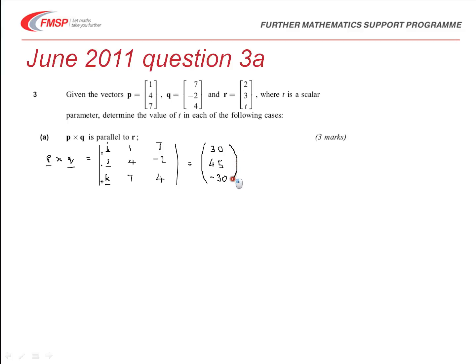So now we've got to realize, if this P cross Q is parallel to R, it must be a multiple of R. We can see that first entry is a 2, and we've got 30 in the answer for P cross Q, so this must be 15 lots of whatever R is. So this must be 15 times 2, 15 times 3 gives us 45, so what times 15 gives us negative 30? This would have to be negative 2, and so the value of T that we require here is T equals negative 2.